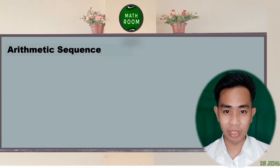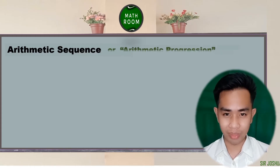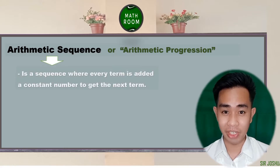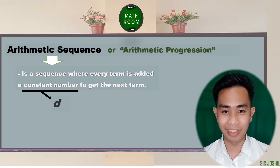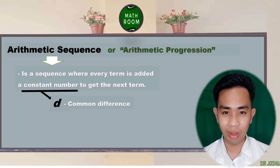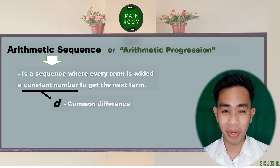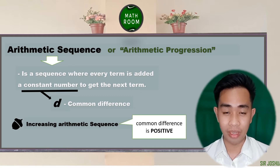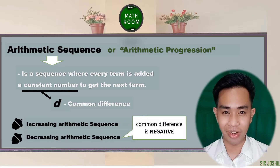Arithmetic sequence is also known as arithmetic progression. By definition, an arithmetic sequence is a sequence where every term adds a constant number to get the next term. This constant number, usually denoted by small letter d, is what we call the common difference. The common difference can be positive or negative. If we have an increasing arithmetic sequence, the common difference is positive. If we have a decreasing arithmetic sequence, the common difference is negative.